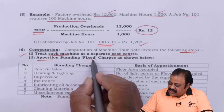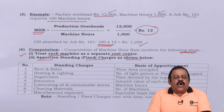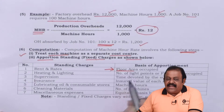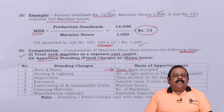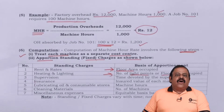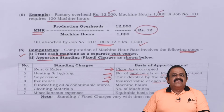Next, apportion standing fixed charges as shown below. Standing charges means fixed cost — for example, rent of the factory area where all machineries are kept. This rent is a common expense required to be allocated between all machineries equitably. For example: rent and rates based on floor area occupied, as each machinery requires a different floor area depending on its size or weight; heating and lighting based on number of light points or floor area; supervision based on time devoted by the supervisor; insurance based on the insured value of each machine.